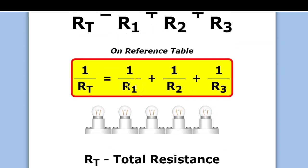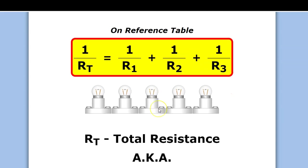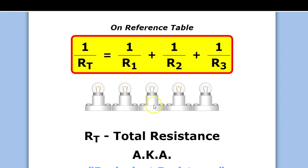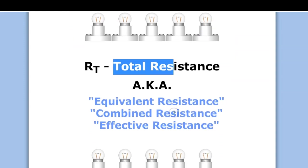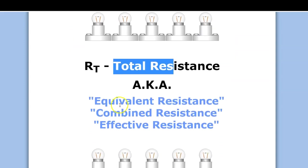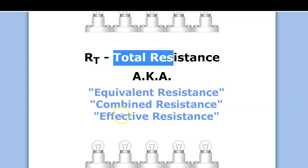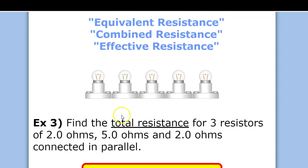With a series circuit, to find the total resistance you simply add up all the resistors. In a parallel circuit, you have a more complicated equation, at least if you have the resistance values. Remember that total resistance is also called equivalent resistance, combined resistance, or effective resistance.